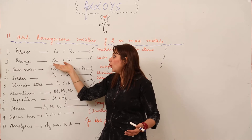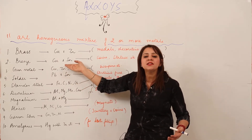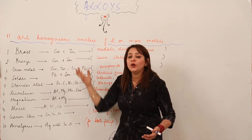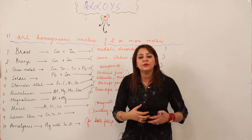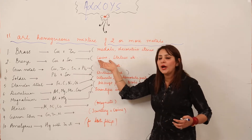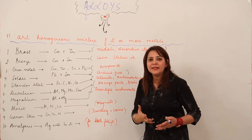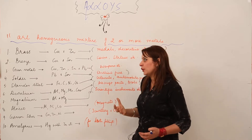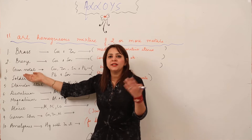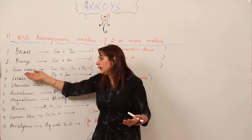The second alloy is bronze, which is another alloy of copper. In bronze, copper is mixed with tin (Sn). It is used for making coins, statues, decorative items, and so on.